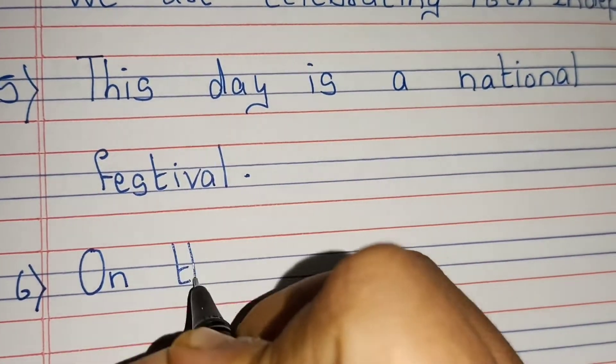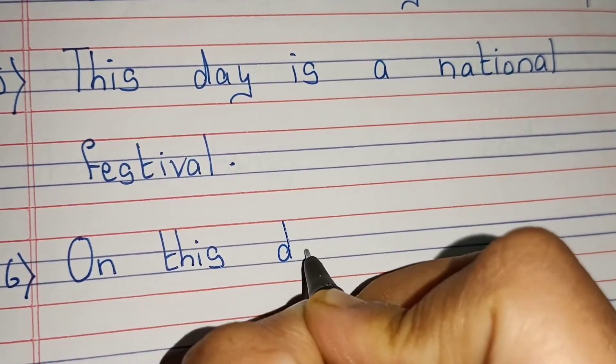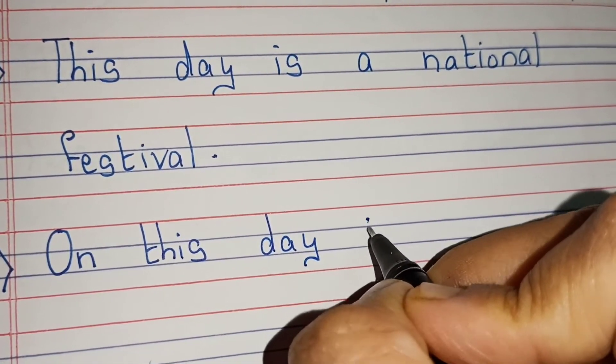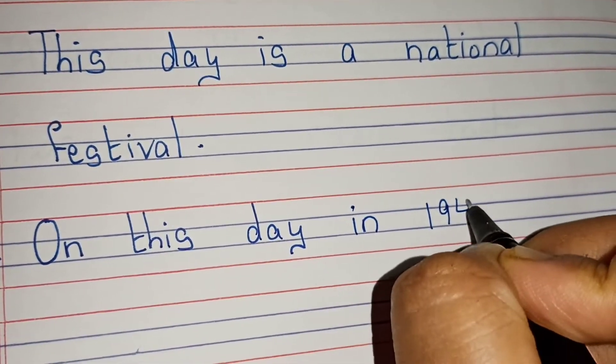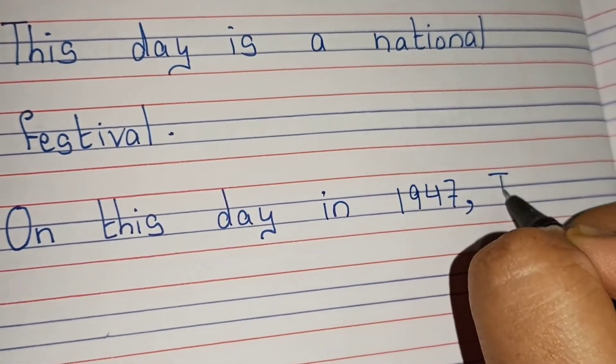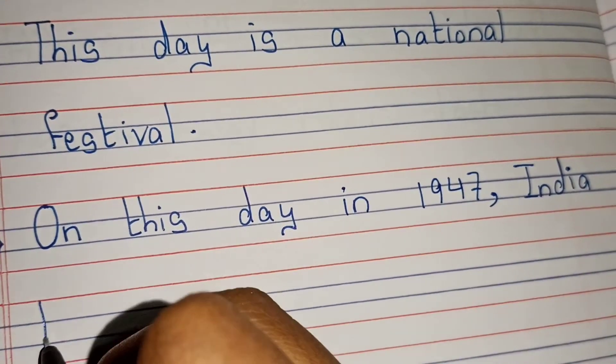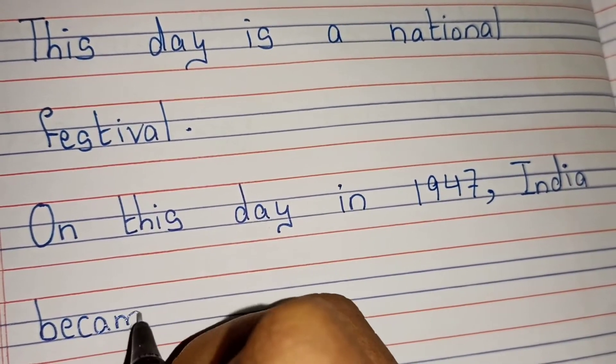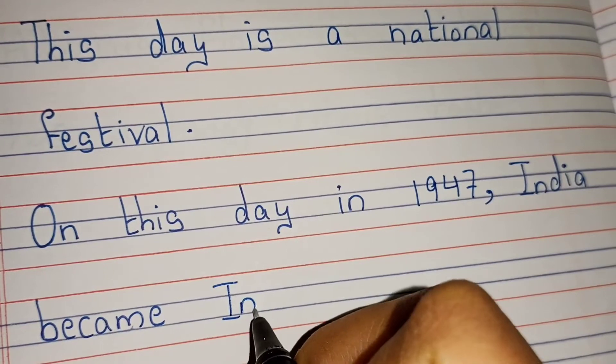On this day in 1947, India became independent.